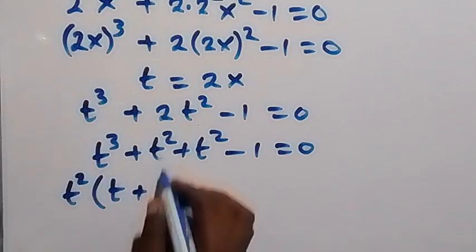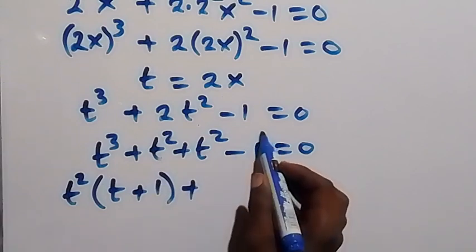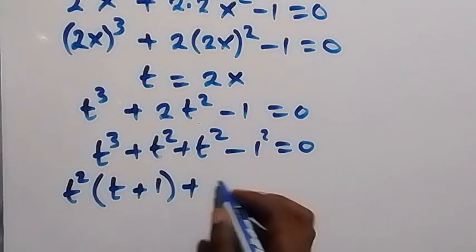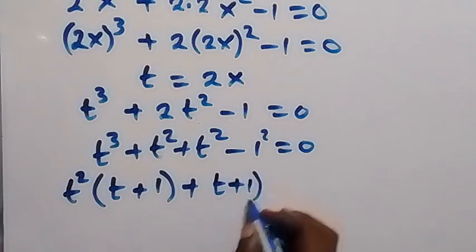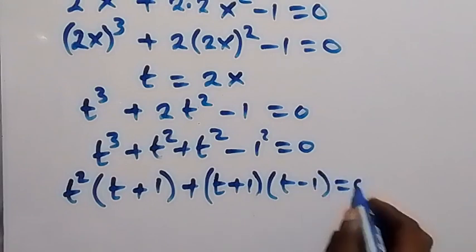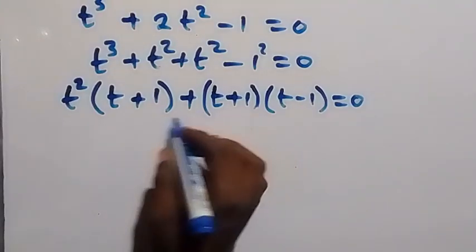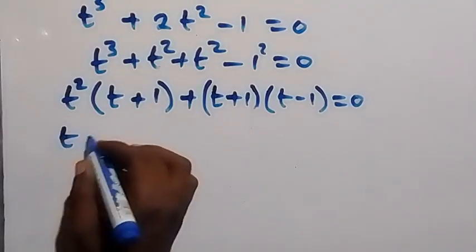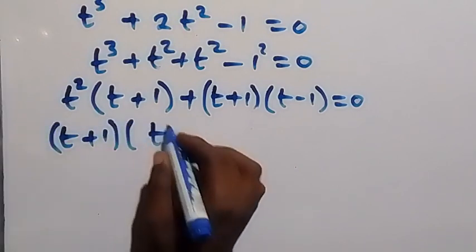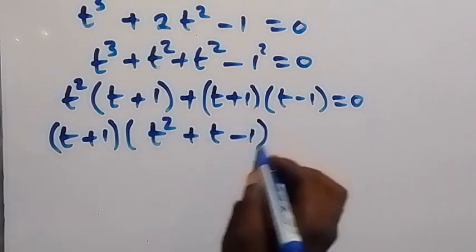T is left here, then 1 is left here. Then on the other side we can say we have 1 squared as well, because 1 can also be written as 1 squared. Then using the perfect square we have t plus 1, then multiply by t minus 1, which equals to 0. And then in the next step we have t plus 1 as common, we take it out. We have t plus 1, then out into bracket, t squared is left here, plus t minus 1 left here, which equals to 0.